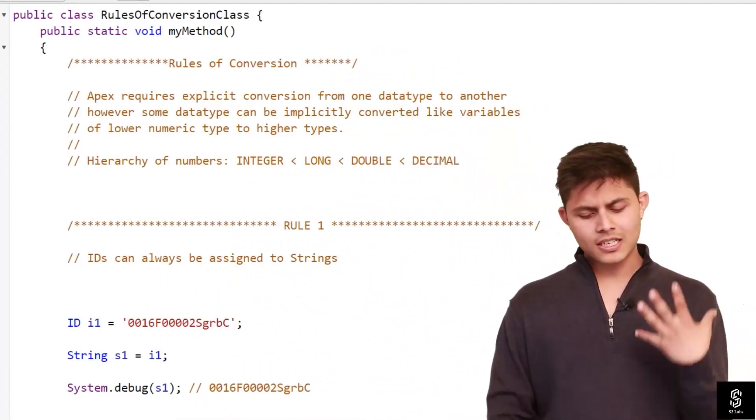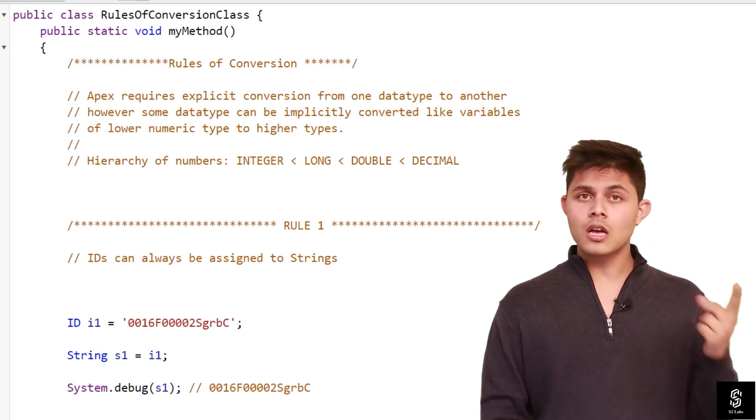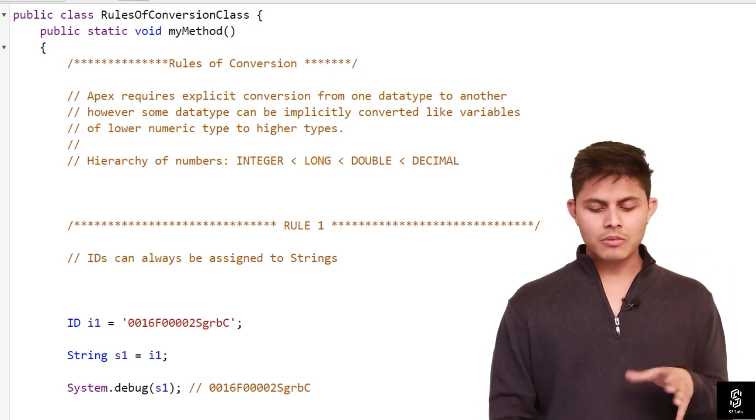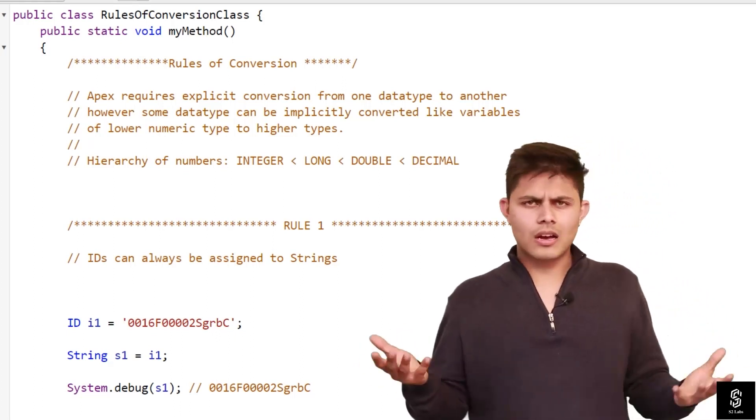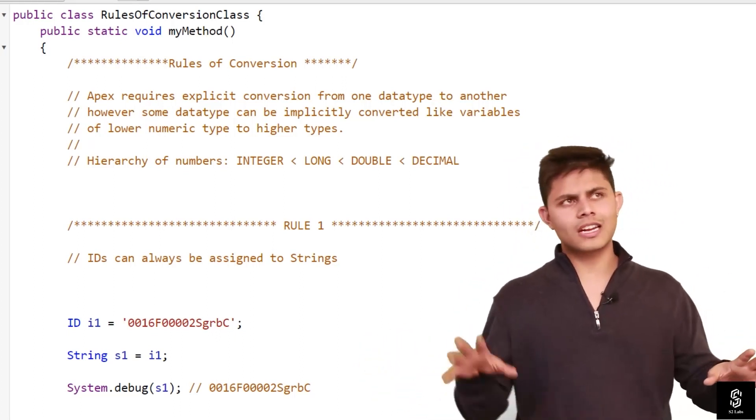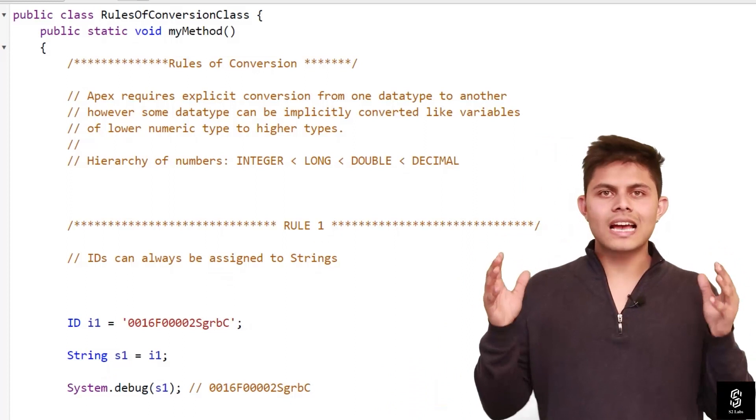This is exactly what it means. Apex requires explicit conversion from one data type to another. However, some data types can be implicitly converted, like variables of lower numeric type to higher numeric type. I'm talking about lower numeric type to higher numeric type. What exactly is the order of this numeric type from lower to higher?